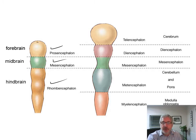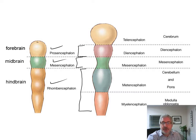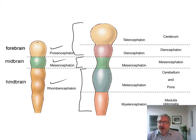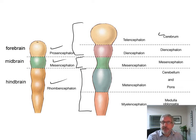The rhombencephalon becomes the cerebellum, pons, and medulla oblongata. The mesencephalon becomes the mesencephalon, or the midbrain. And the prosencephalon becomes the telencephalon and the diencephalon. The telencephalon is the cerebrum; the diencephalon we still call the diencephalon. The mesencephalon we usually refer to as the midbrain.